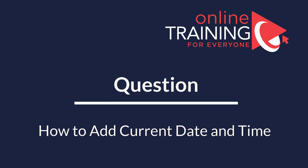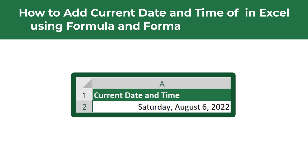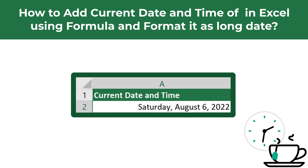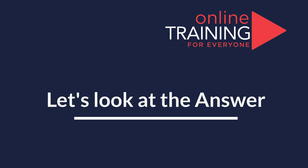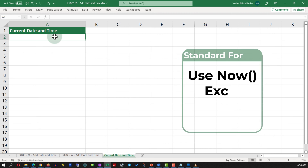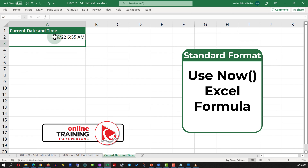Here's an interesting Microsoft Excel test question which tests your knowledge of Excel formulas. You need to show how to add the current date and time in Microsoft Excel using a formula and then format it as a long date. The solution is very simple — all you need to do is type in the NOW function. The NOW function returns the date and time in standard format.